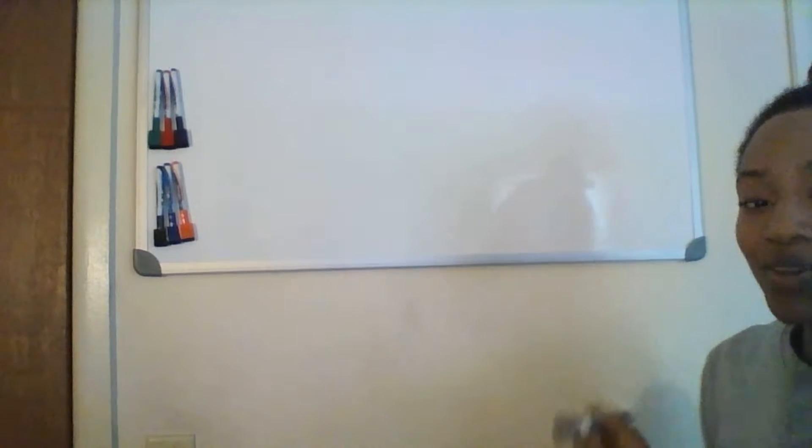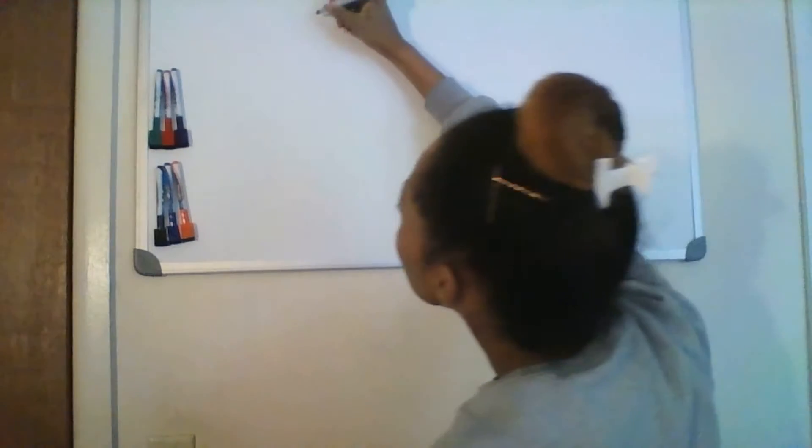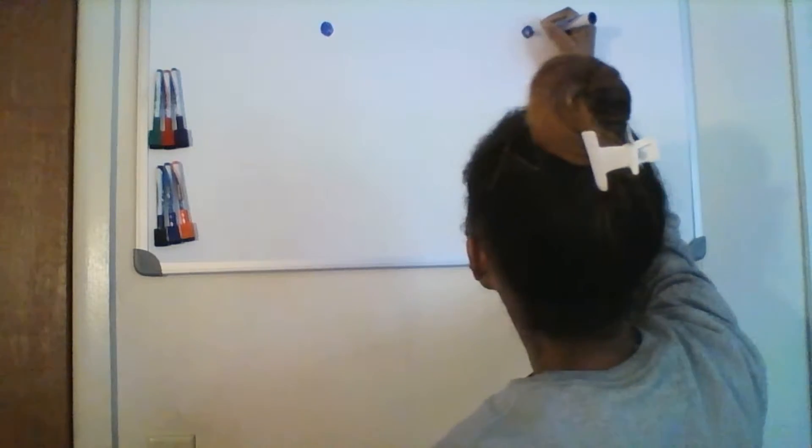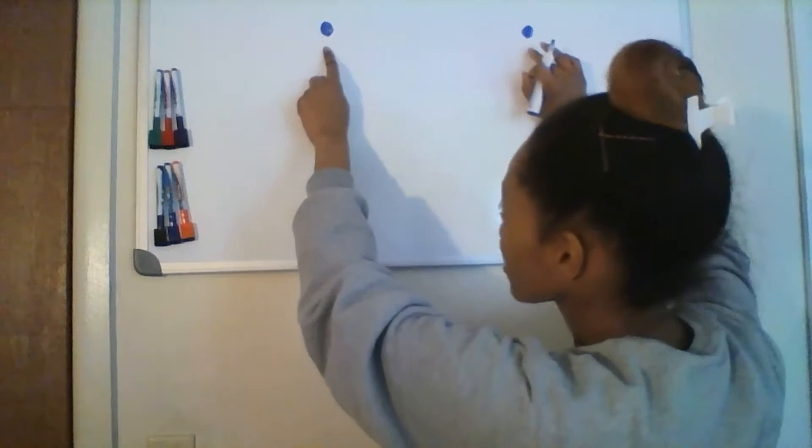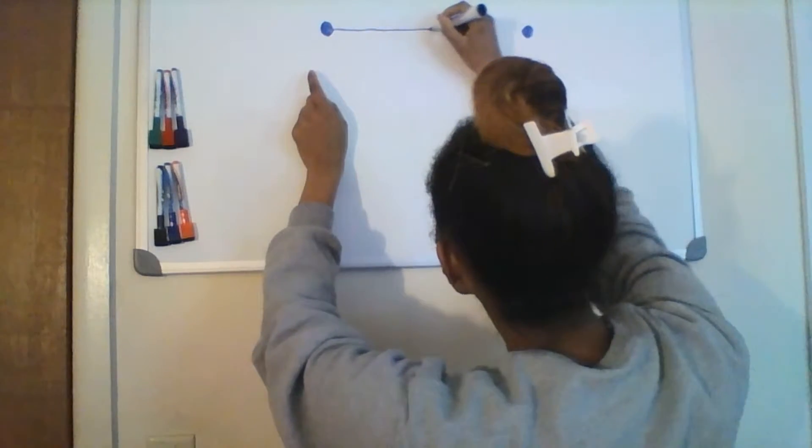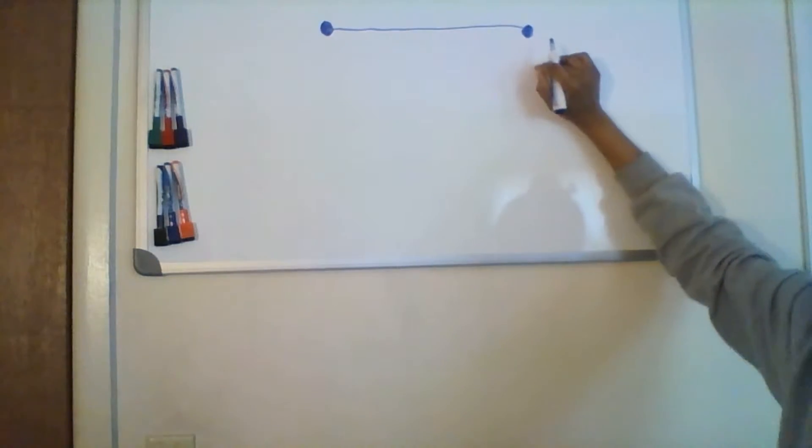Okay, so again, we have a line segment. And remember, a line segment is a one-dimensional idea that connects two points along a straight path.